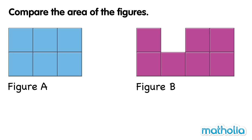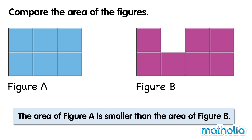Compare the area of the figures. Figure A has an area of 6 square tiles. Figure B has an area of 7 square tiles. The area of figure A is smaller than the area of figure B.